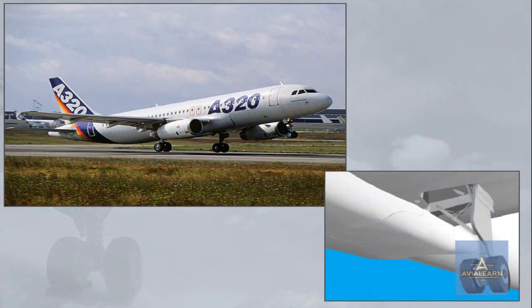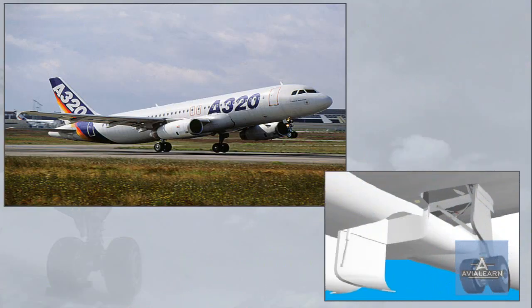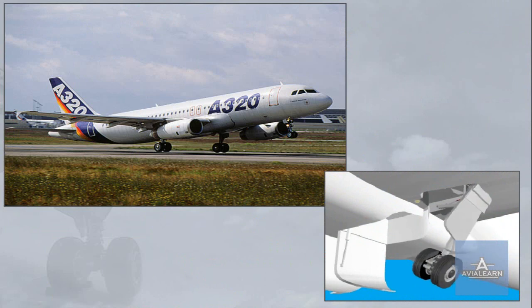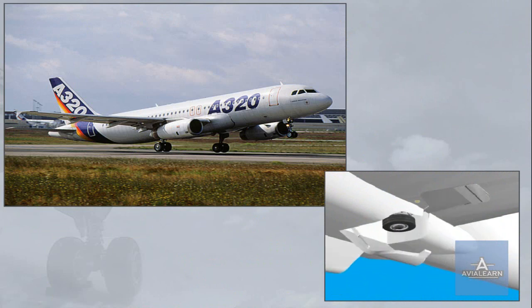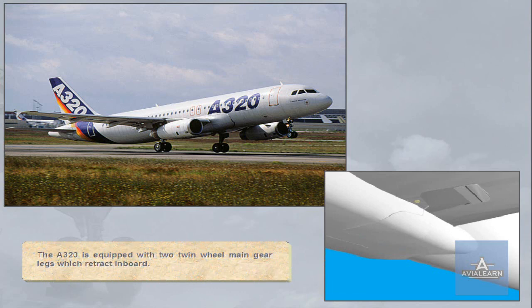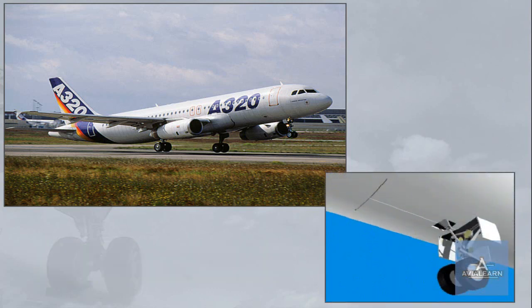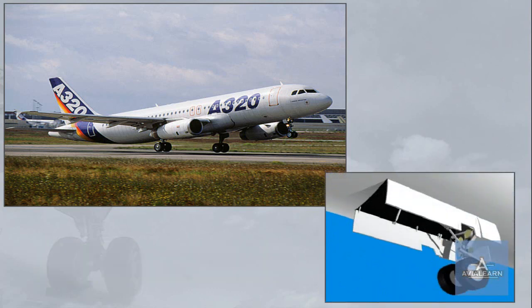The A320 is equipped with two twin wheel main gear legs which retract inboard and a dual wheel nose gear which retracts forward.